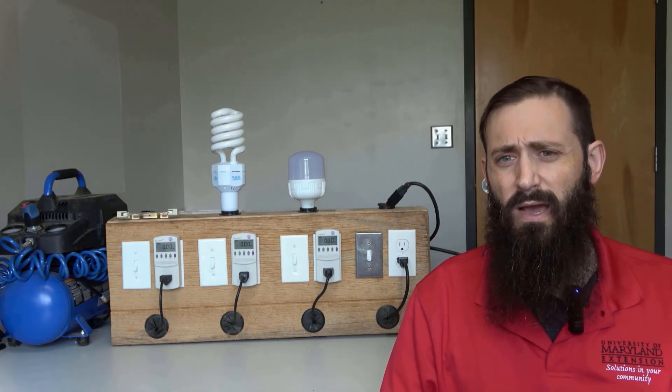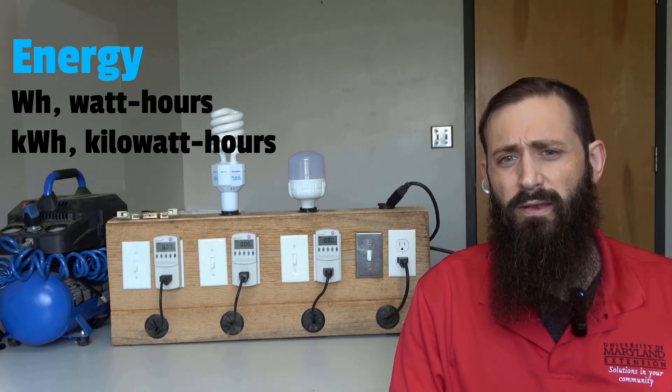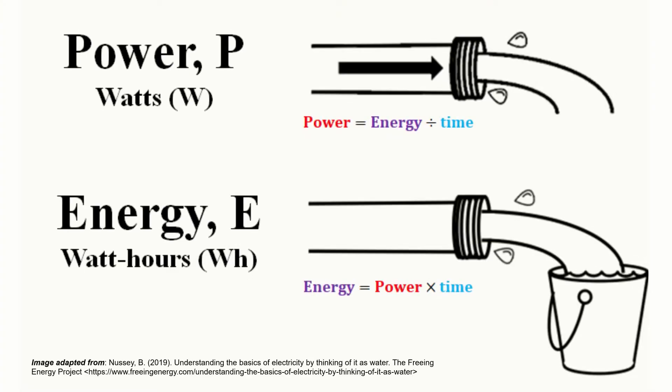While electric energy is commonly measured in watt hours (WH), the bills from your electric utility will typically report your energy use in kilowatt hours (KWH). To better understand the difference, we can compare electricity flowing through a circuit to water flowing through a garden hose. Power is like the volume of water flowing through the hose under a given pressure and diameter, while energy is like measuring the volume of water that has flowed through the hose over a given period of time — it accounts for how long that system is producing power.